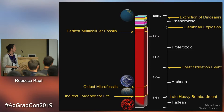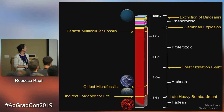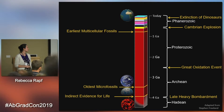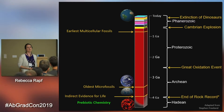At about 3.5 billion years ago we had our oldest microfossils — that's our oldest direct evidence for life. Then we've got indirect evidence for life stretching back to, depending on who you talk to, about 3.8 to maybe 4 or 4.1 billion years ago. We also have this period of the late heavy bombardment, though its extent is also up for debate, right around 3.9 to 4 billion years ago.